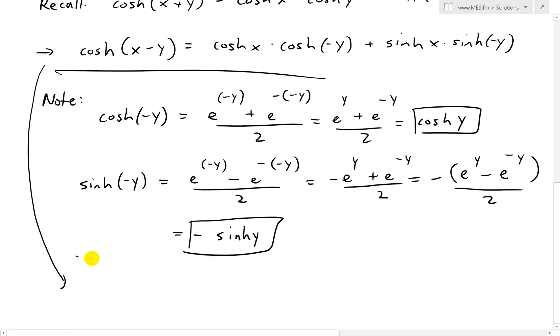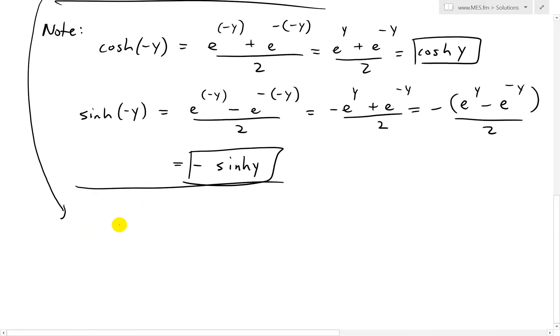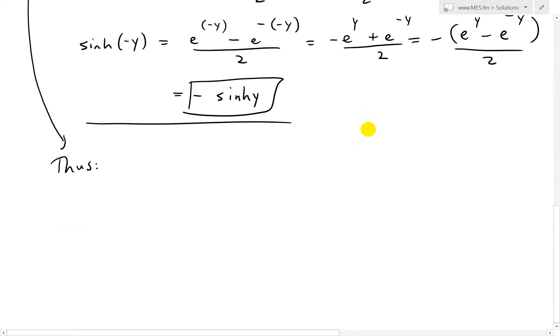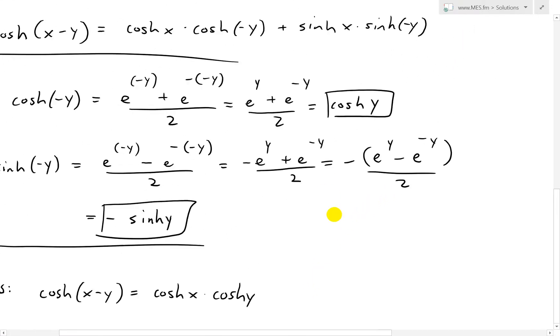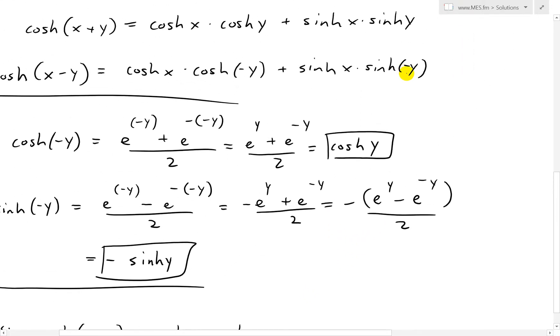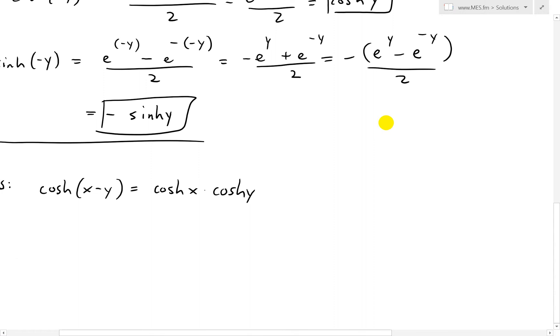we can put this all down over here. Thus, we have cosh x minus y equals cosh x times cosh y, because cosh negative y equals cosh y. And then this one's going to go to sinch y, but we'll have a negative. So this will be minus sinch x times sinch y.